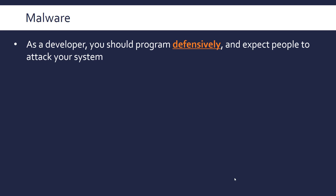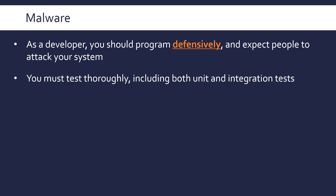Generally speaking, as a software developer you should be programming defensively, meaning you expect people to misuse and even attack your system. Defensive programming means you validate all inputs, sanitize inputs to make sure they're not forming an injection attack, and keep data secure and separate from the main part of a program. You should also be testing very thoroughly — this includes both unit and integration tests. Most software is written by multiple people, so you test a unit you've written using unexpected data, posing as an attacker and deliberately trying to target your system. You also perform integration tests, putting individual modules together and testing from a more holistic perspective.